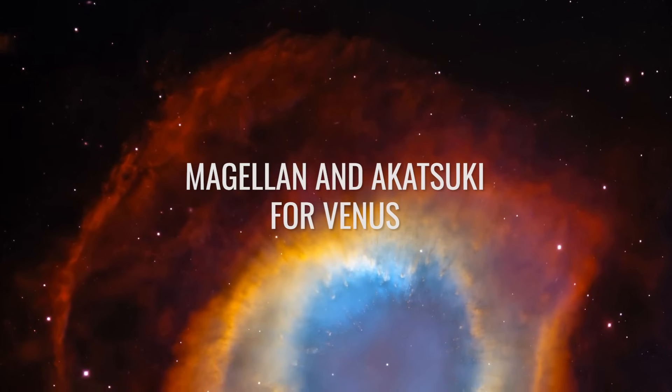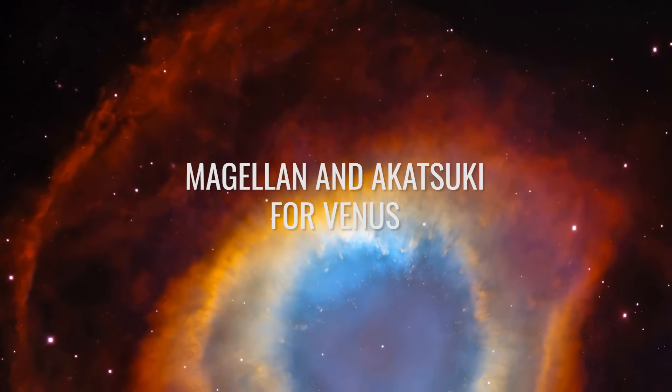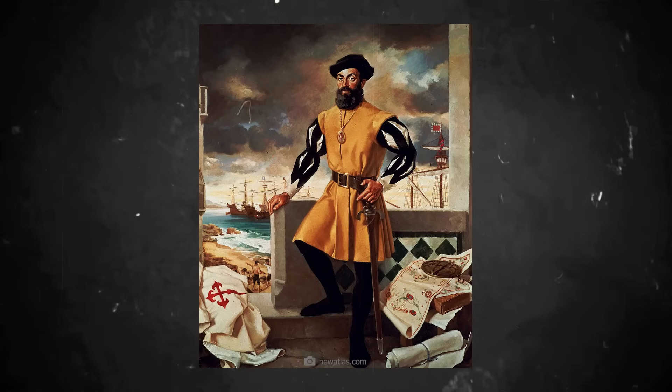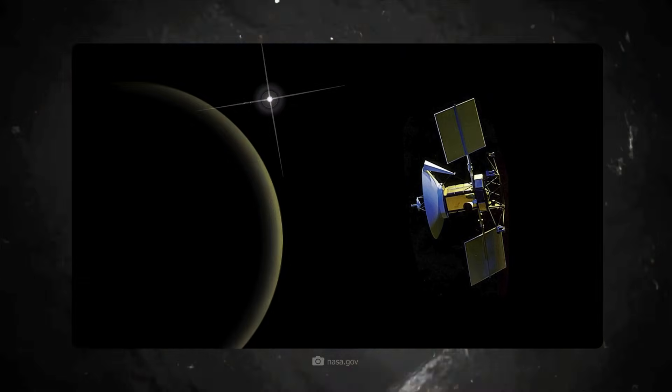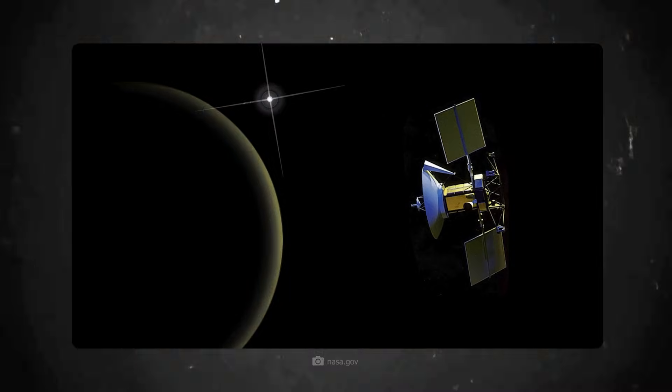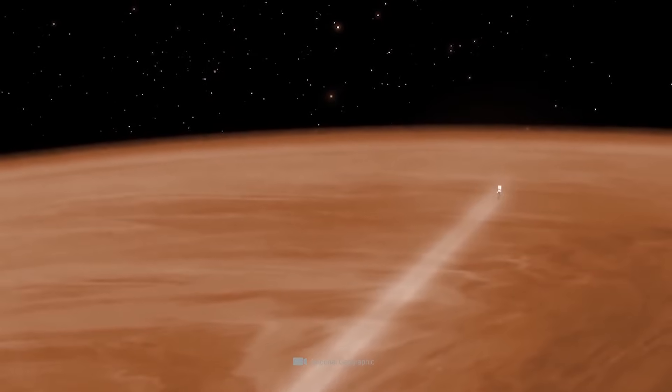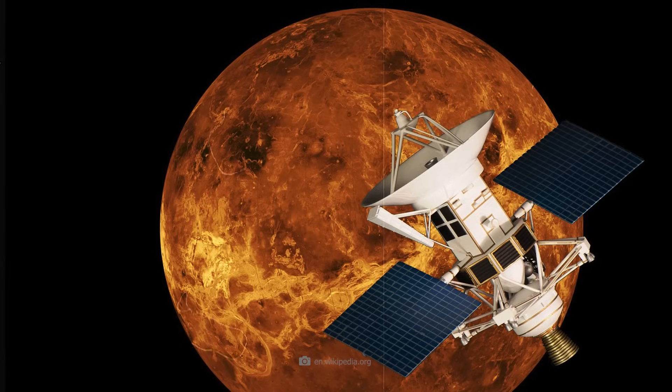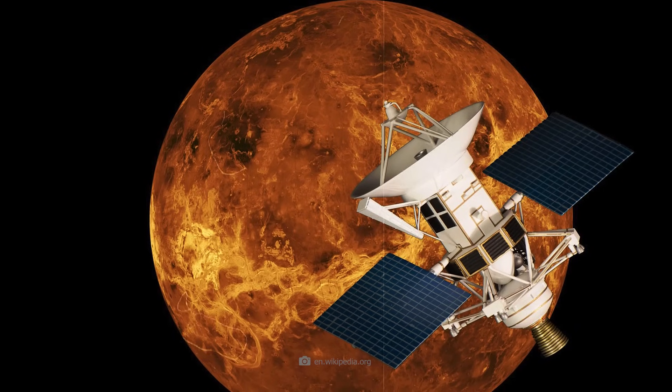Ferdinand Magellan sailed around the world in 1519 and 470 years later, in 1989, a probe named in honor of the navigator set off for Venus. The aim this time was also to map a world, but this time Magellan devoted himself to mapping an alien world.